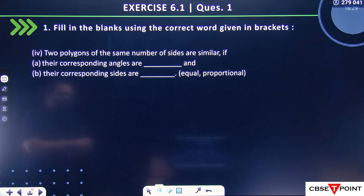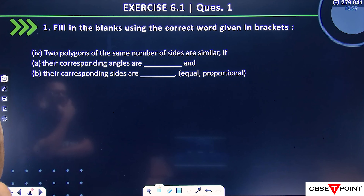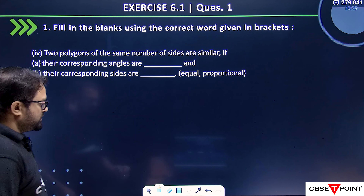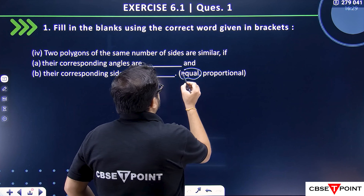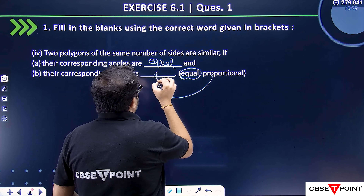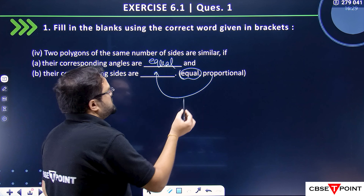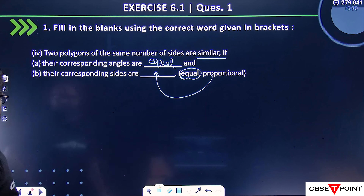Two polygons of the same number of sides are similar if their corresponding angles are equal and their corresponding sides are proportional. So here you fill in: their corresponding angles are equal. If the angles are equal and the sides are proportional, then the polygons will be similar. This is the important thing you have to remember, students.